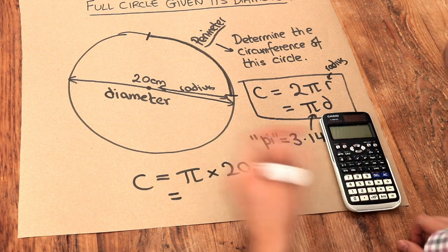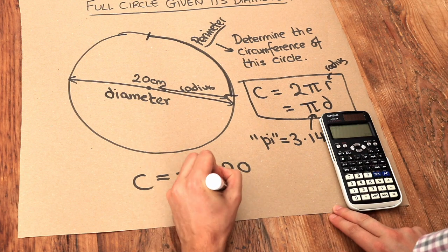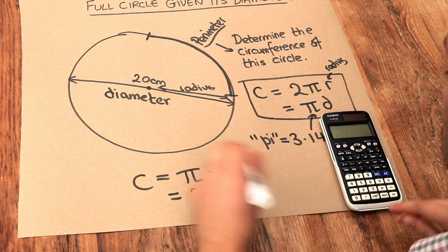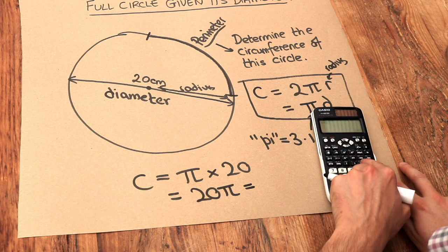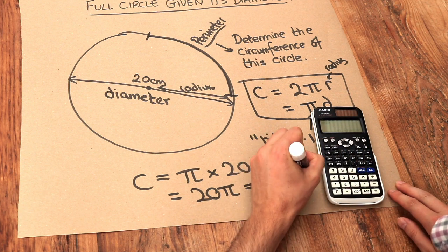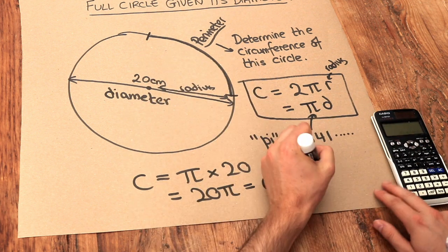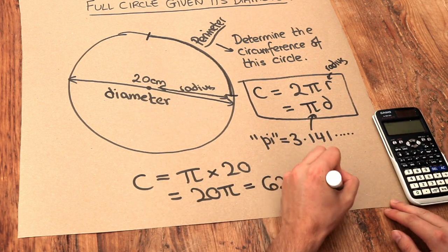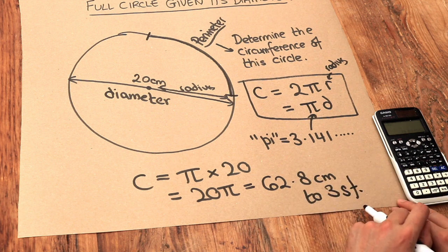But we maybe want it as a decimal. So we could write the answer as 20 pi if it wants the answer in exact form. Or you can press the SD key to convert it to a decimal. And we get 62.8 centimeters. That's the unit there. Two, three significant figures. And that's the final answer.